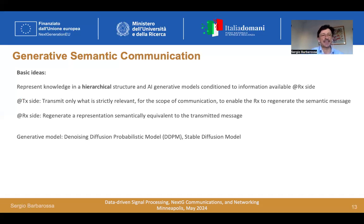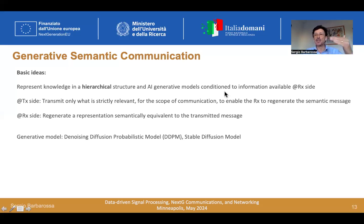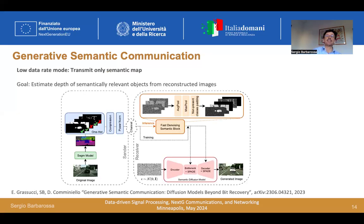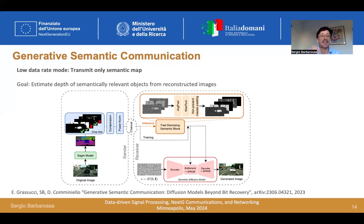Now let's become more sophisticated than just a variational autoencoder. The basic idea is to represent knowledge in a hierarchical structure and use AI generative models conditioned on the information we are able to convey through the channel. Depending on the channel capacity, we transmit more or less data, and depending on the data at the receiver, we generate something more or less sophisticated. In the very low data rate mode, we start from an image, extract its segmentation map, identifying semantically relevant objects such as pedestrians, cars, and traffic lights, and transmit only the segmentation map to the receiver.